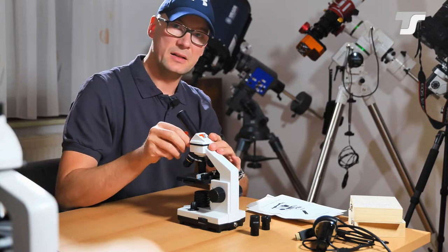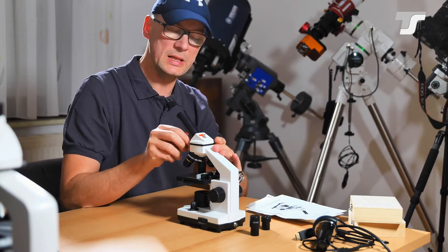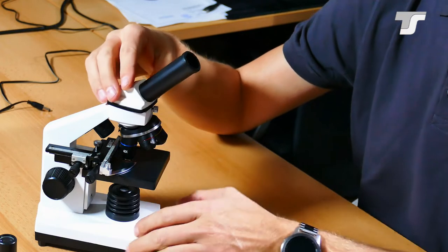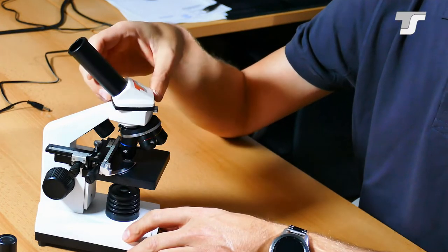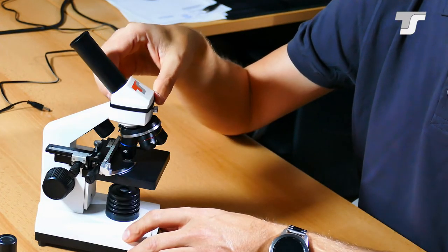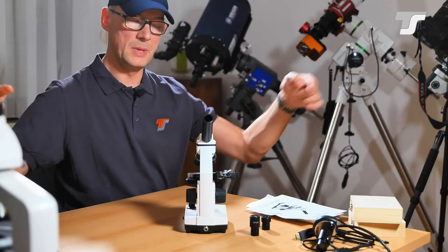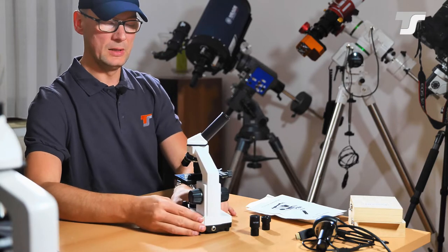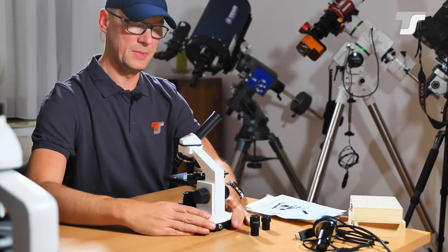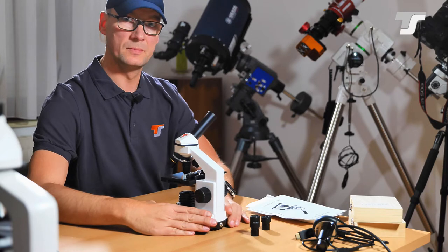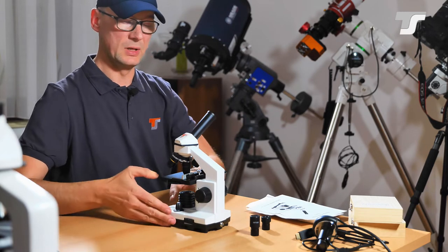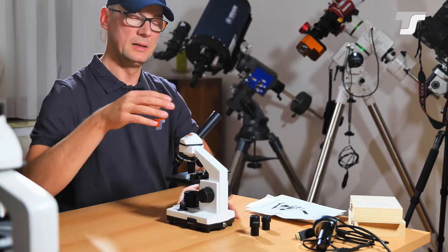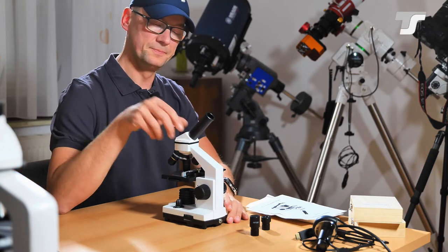The head of the microscope is turnable. When loosening this lock screw you can turn the head of the microscope. For example if there are many people standing around your table then you can just turn the microscope. You don't have to turn the microscope itself. Then it will catch different light or something. So this is not working that good. But by turning the head you're good to go.